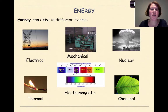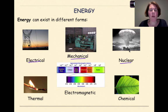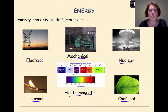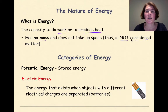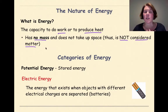Energy can exist in different forms. We can have electrical energy, mechanical energy, nuclear energy — which we'll talk more about when we get to nuclear chemistry — thermal energy as we see in heat, electromagnetic energy, and chemical energy that exists in a leaf through photosynthesis. So what is energy? Energy is the capacity to do work or to produce heat. Energy has no mass and does not take up space, therefore it is not considered matter.